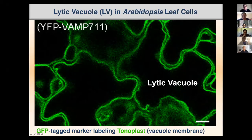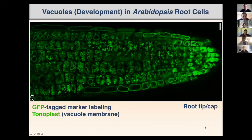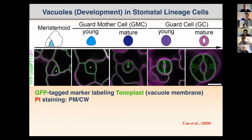You can see the tonoplast membrane labeled in the images. The textbook impression is the big central vacuole in the leaf cell. But if you look at the root — the root tip and root cap — the vacuoles are very variable; we can have different sizes. Even within a single cell we can have different types of vacuoles, and you can see the development of vacuoles from small to medium to large.